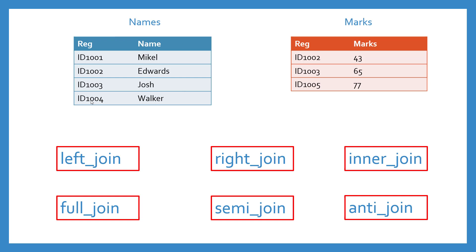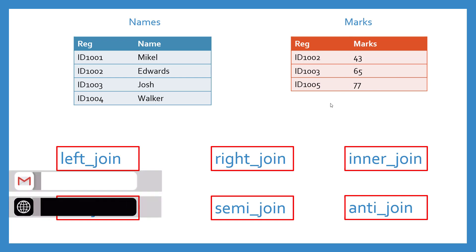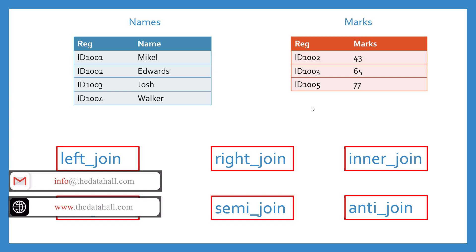Let's say we have a data frame that contains the registration number of different students and their names. And we have another data frame that contains registration numbers — some might match with the names table, some might not — and it also contains the marks of those students. What we need to do is prepare a report sheet, and for that we need to combine these two data sets.